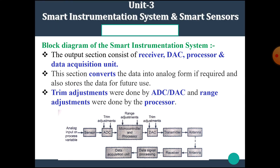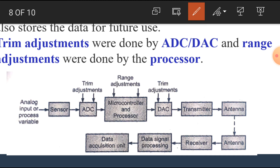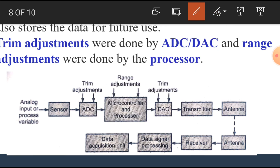To recap: if any Instrumentation System contains a Microprocessor or Microcontroller for processing, automating any process, or communication, then it is known as a Smart Instrumentation System. The Sensor converts the physical parameter into its equivalent electrical quantity. This electrical signal, which may be in Analog form, is converted into Digital form by the Analog to Digital Converter. The Digital output is then given to the Microcontroller and Processor block for further processing.